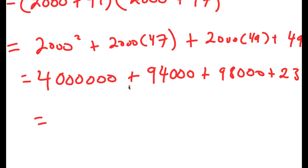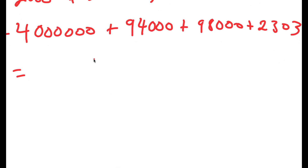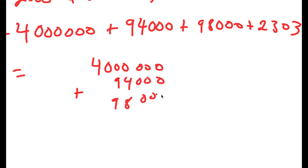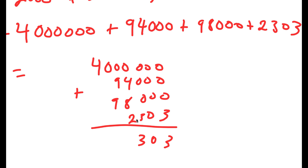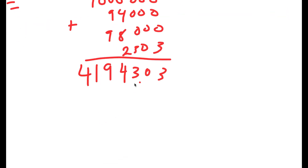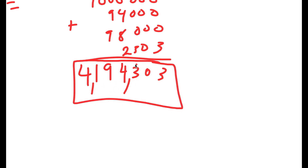So all I have to do is add all of these up: 4,000,000 plus 94,000 plus 98,000 plus 2,303. Adding the digits: 3 here, 0 here, 3 here; 8 plus 2 is 10, plus 4 is 14, carry the 1; 9 plus 9 is 18, plus 1 is 19, carry the 1; giving 1 and 4. So my final answer is 4,194,303.